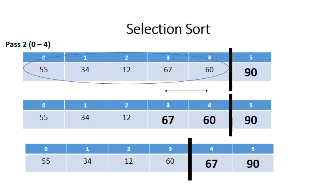So when you do pass two, the second time you go through the list, you need to go from elements zero to four, since element five is already in its position. In this case, it will find that 67 is the maximum, and that it needs to swap with 60, which is at position four.